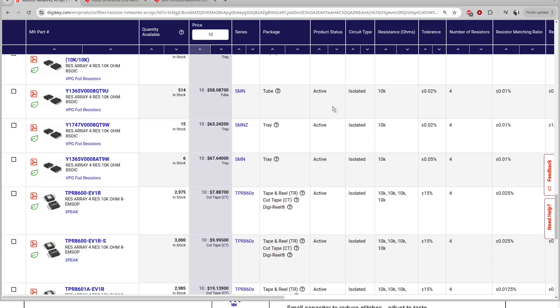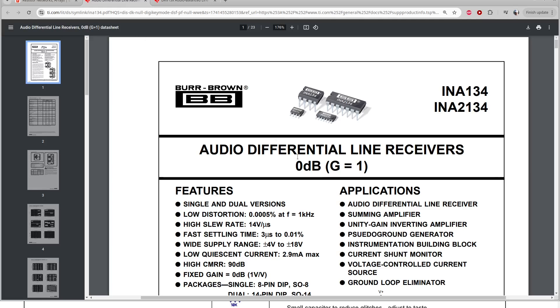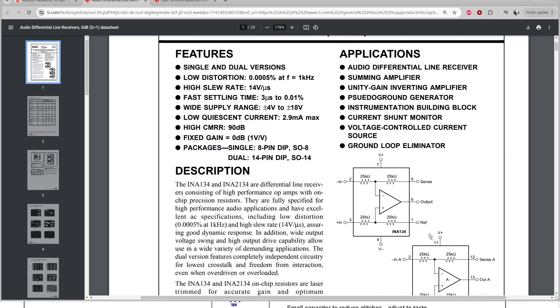A better solution would be to use a packaged difference amplifier. This year's inexpensive one for audio applications appears to be the INA134. It's a couple or three bucks in hobbyist quantities. It includes the op-amp and four trimmed resistors in a single package. It's a low distortion op-amp, and it's supposed to have a typical 90 decibel, minimum 74 decibel, of common mode rejection. The cheapest of the Vishay resistor arrays would give us only 66 decibels.